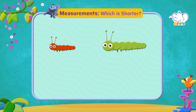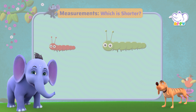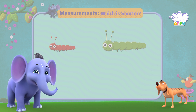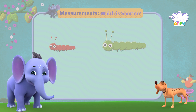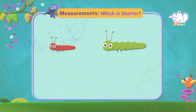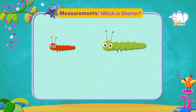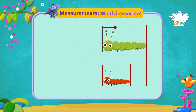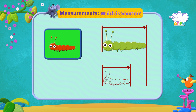Which is shorter? Hey Tiger, today we're going to learn about measurements — like which is short and which is long. Let's look at these pictures and find out which is shorter: the red caterpillar or the green caterpillar. We can see that this arrow is shorter, so the red caterpillar is shorter.